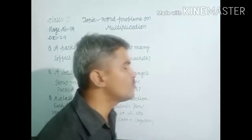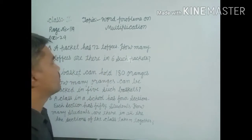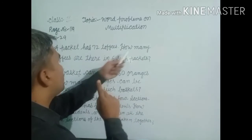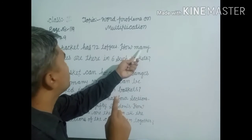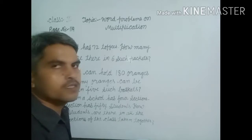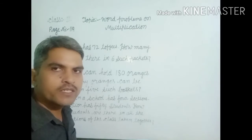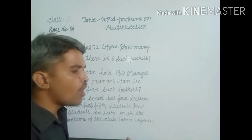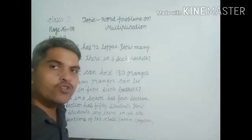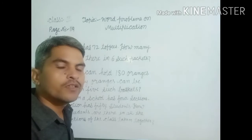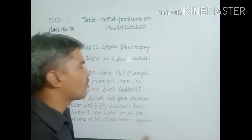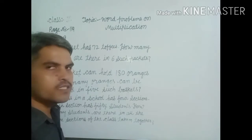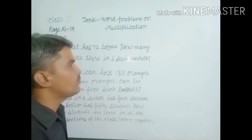So dear students, you understand such type of problems. One packet has 72 toffees. When the number of packets increases, the number of toffees increases. How do you obtain the answer? When you multiply, you get the number of toffees in 6 such packets. Repeated additions written in the form of multiplication.